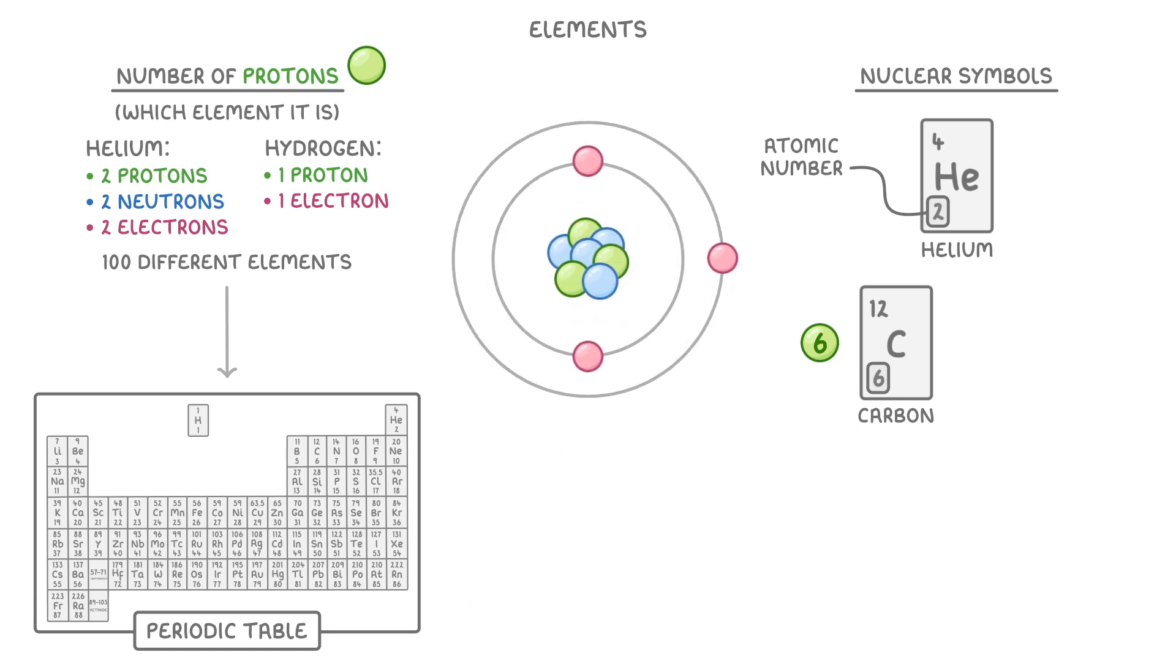So if we found an atom with three protons, like this one here, then it couldn't be carbon. We'd have to find the element with an atomic number of three, which, if we check the periodic table, is lithium.